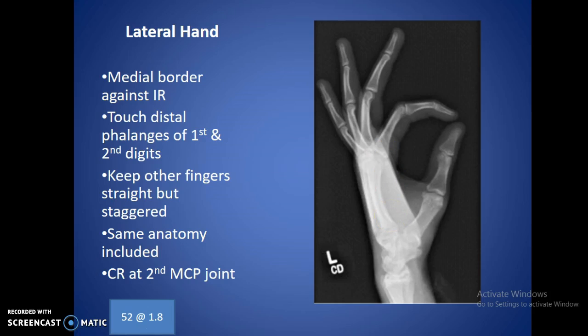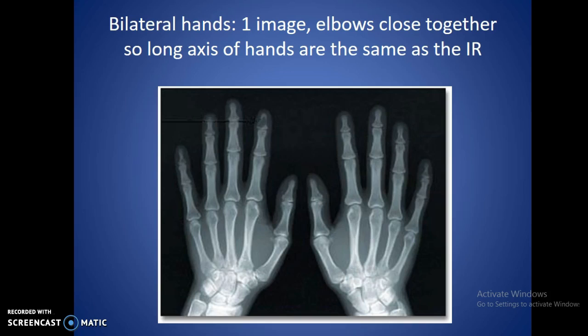For bilateral hands, you can generally get them on one cassette. Just make sure you bring your elbows close together so the long axis of the hands aligns with the IR — the long finger should be lined up more with the wrist and the forearm. You do have to get the elbows pretty close to each other to get straight images.